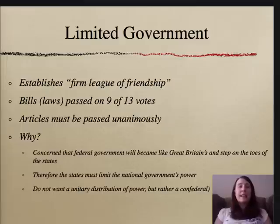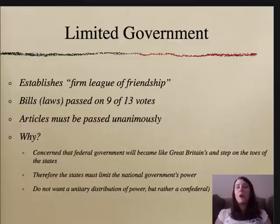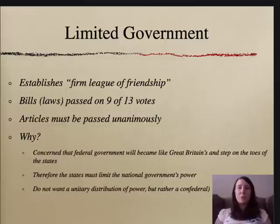Laws only needed nine of 13 votes to go into effect. But for the Articles to be ratified, or for an amendment — a fundamental change to the Constitution — to be passed, all states had to unanimously agree. This was to ensure that the national government wouldn't step on the toes of the states or the American citizens, and that states could limit the power of any executive or national government.